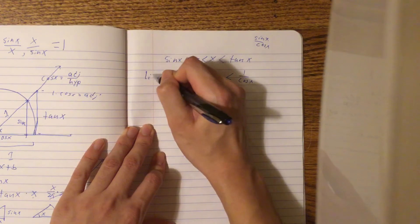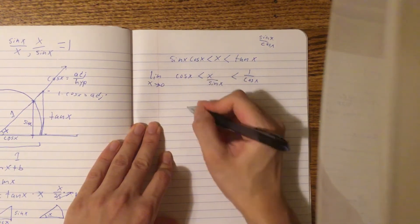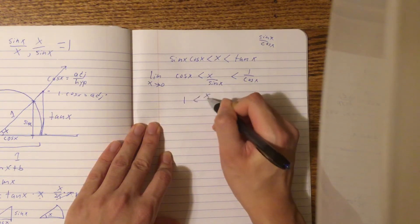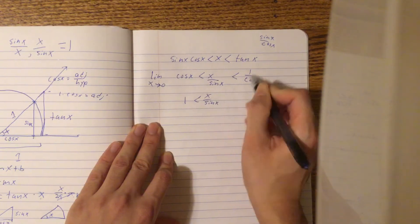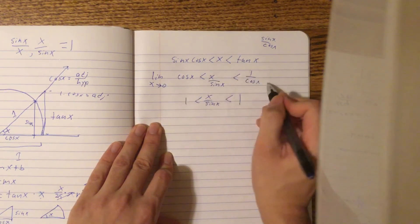And as a limit as x approaches 0, well, cos x just equals 1 as x goes to 0. We don't know what x over sin x is, but 1 over cos x also just equals 1 if x equals 0.